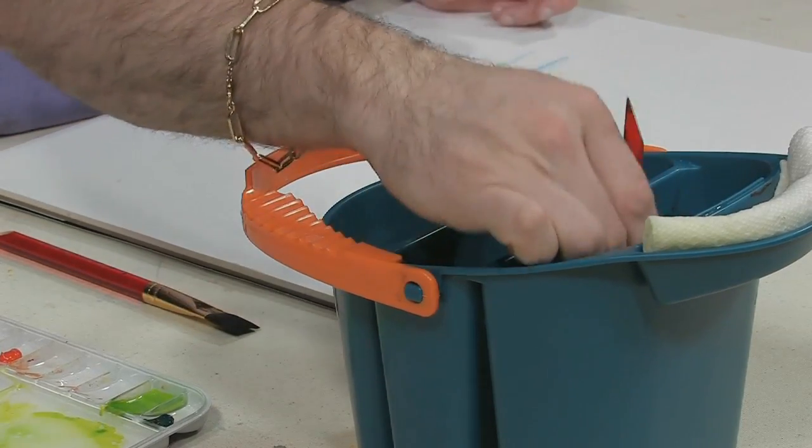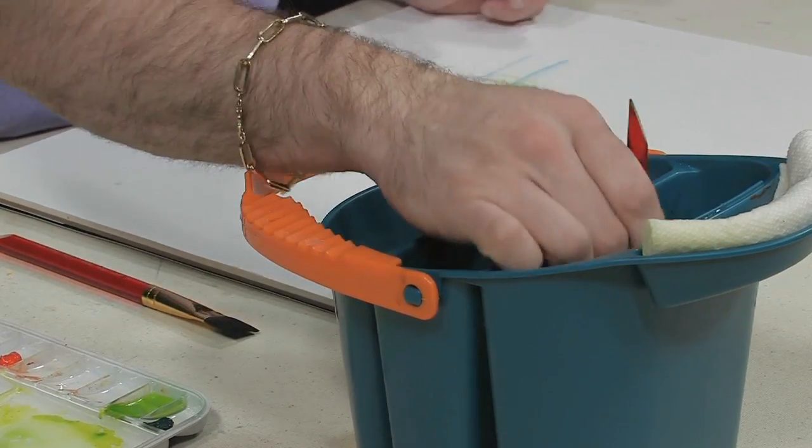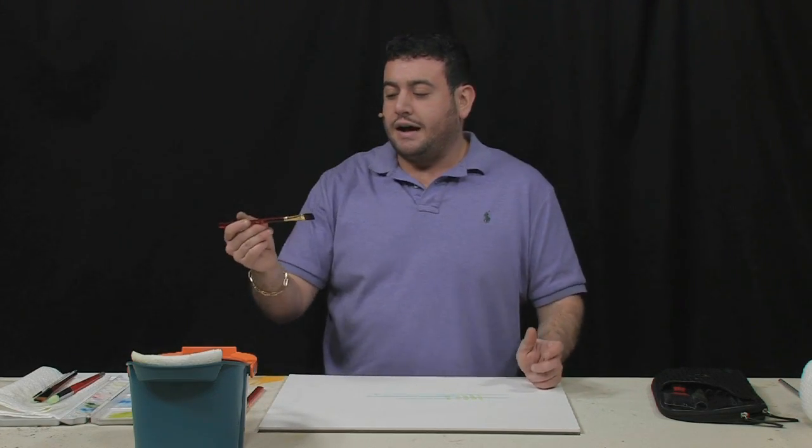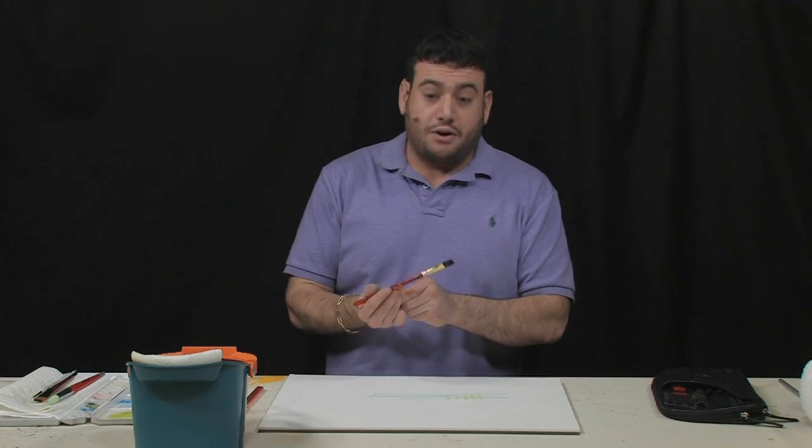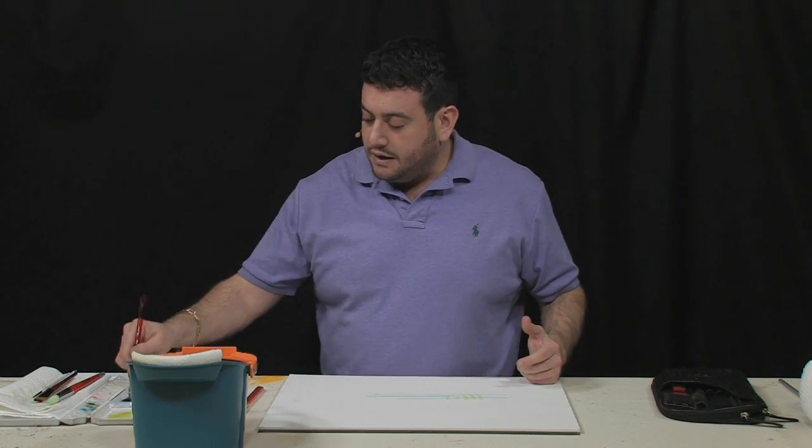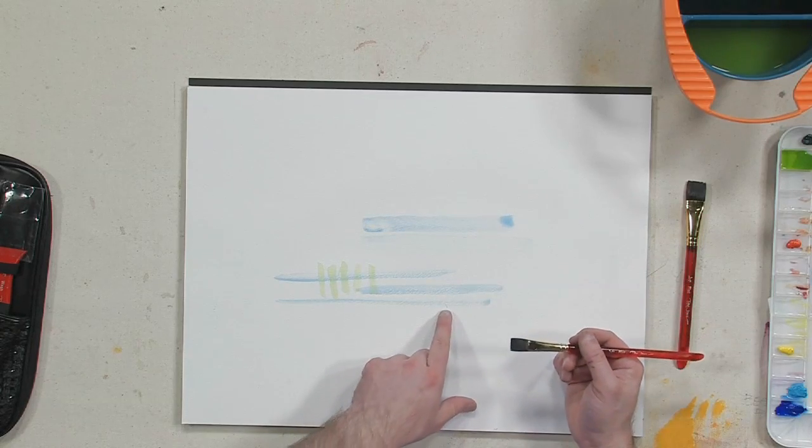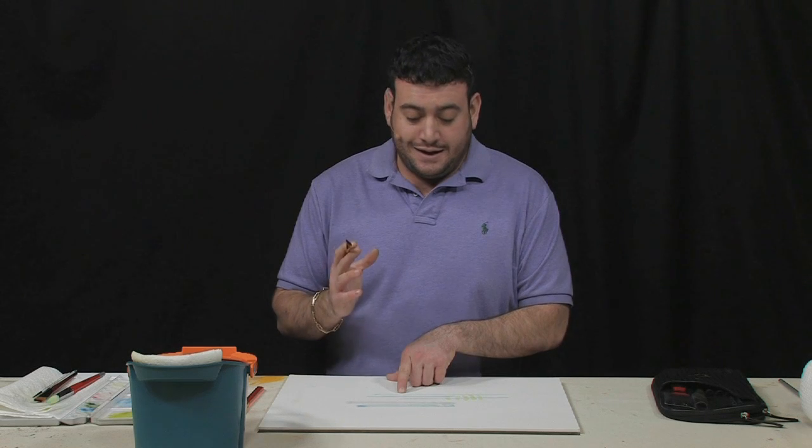Now, the next thing that you have to be conscientious of with a new brush, and this is probably every artist's pet peeve, is you've started to paint, you're getting your color down, and then all of a sudden you see hairs coming out of your brush and onto your art. This can be extremely frustrating.